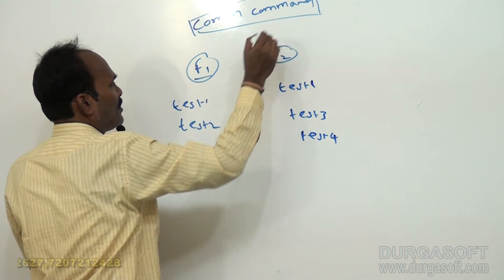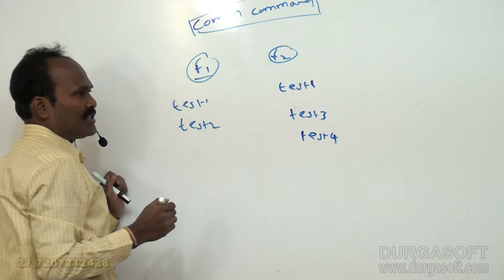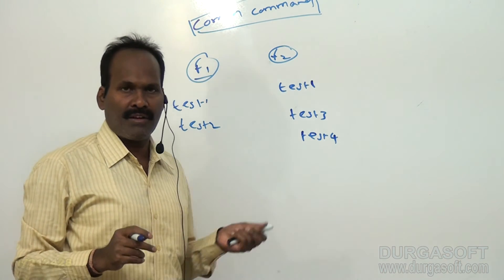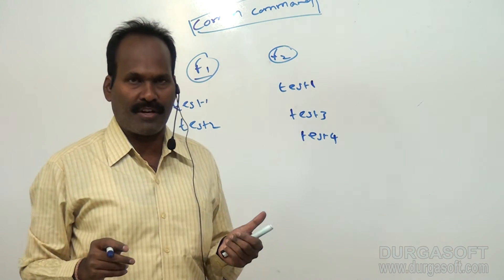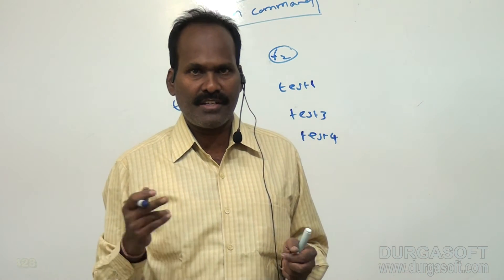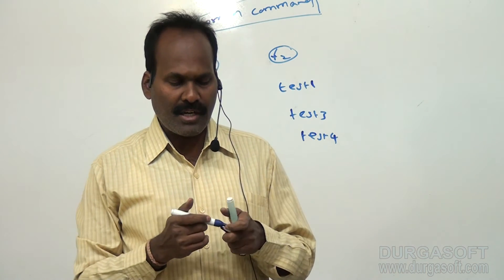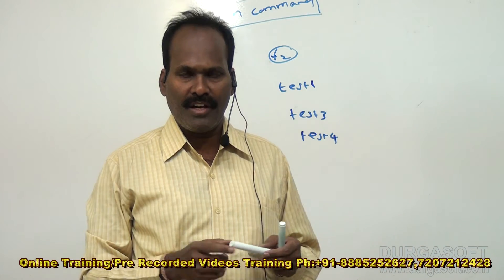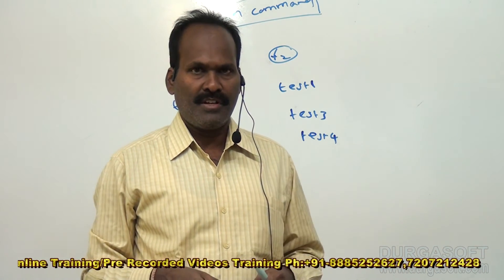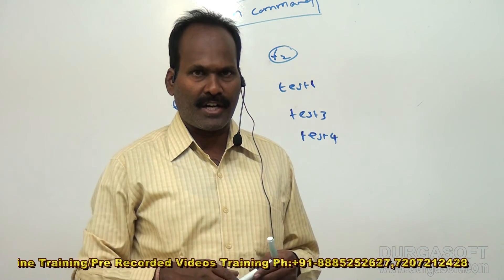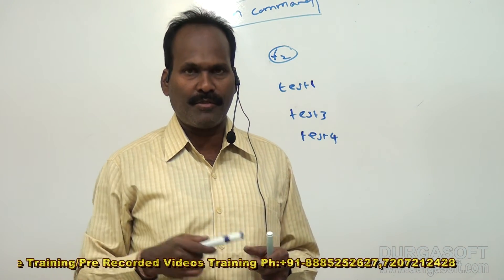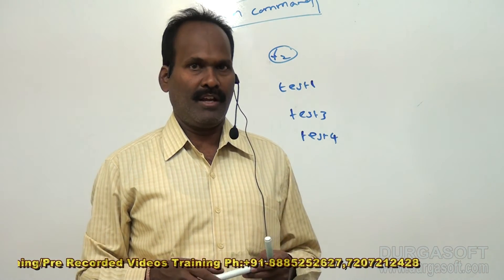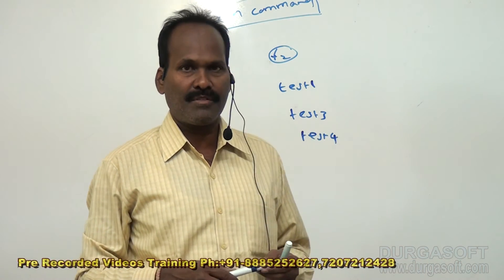When you apply the comm command it is going to display: first, the lines which appeared in the first file but not in the second. Next, in the second column, the lines which appeared in the second but not in the first. In the third column, the items which appear commonly in F1 and F2.